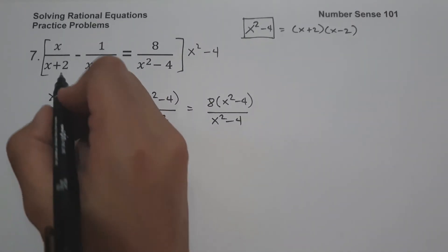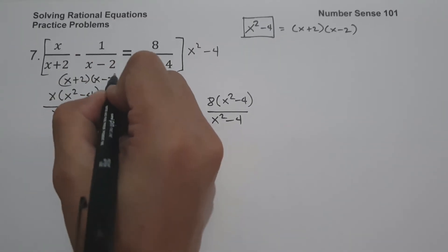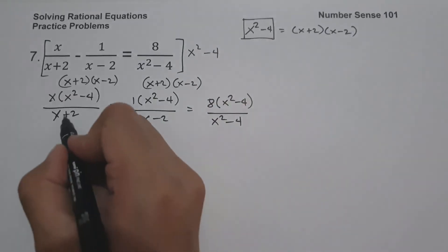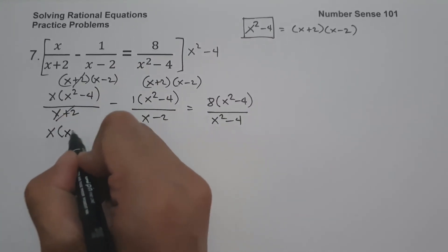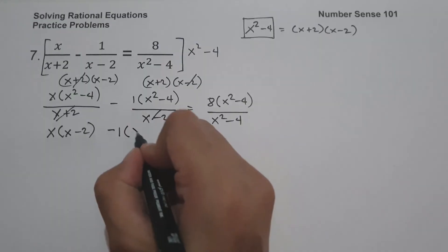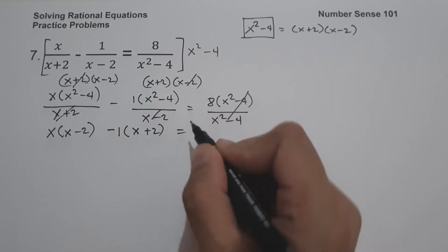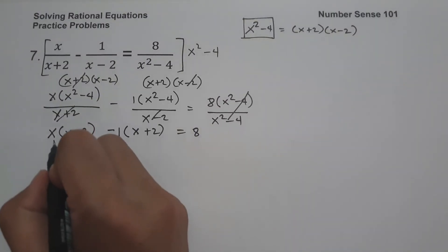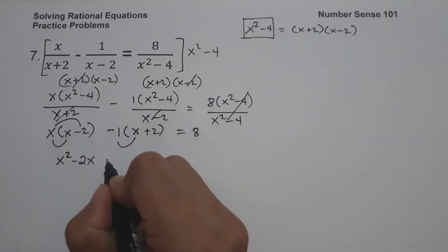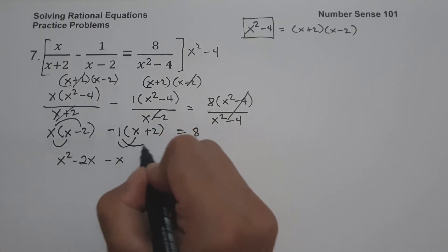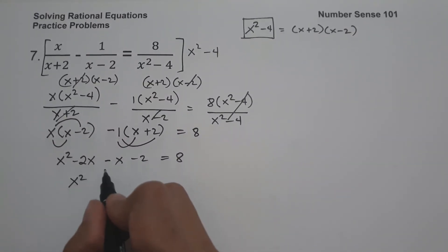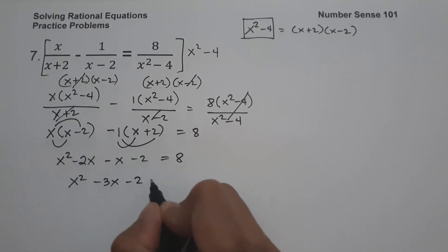Since x squared minus 4 is x plus 2 times x minus 2, we can cancel x plus 2, giving x times x minus 2. Then we cancel x minus 2 on the second term, giving negative 1 times x plus 2. The right side cancels to 8. Expanding: x times x is x squared, x times negative 2 is negative 2x, negative 1 times x is negative x, and negative 1 times 2 is negative 2, equals 8. Combining like terms: x squared minus 2x minus x is negative 3x, minus 2 equals 8.